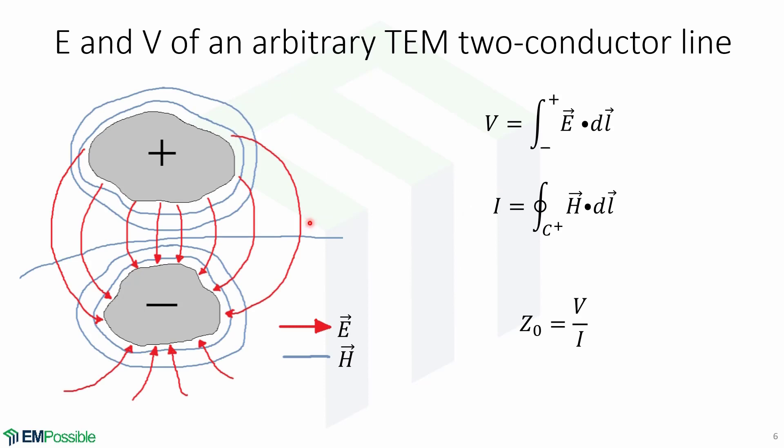Here we will define some basic parameters like voltage and current for a TEM two-conductor line, which is defined here, where the red lines are the electric field and the blue lines are the magnetic fields. For this case, we can obtain circuit parameters like voltage, current, and impedance from Maxwell's equations.